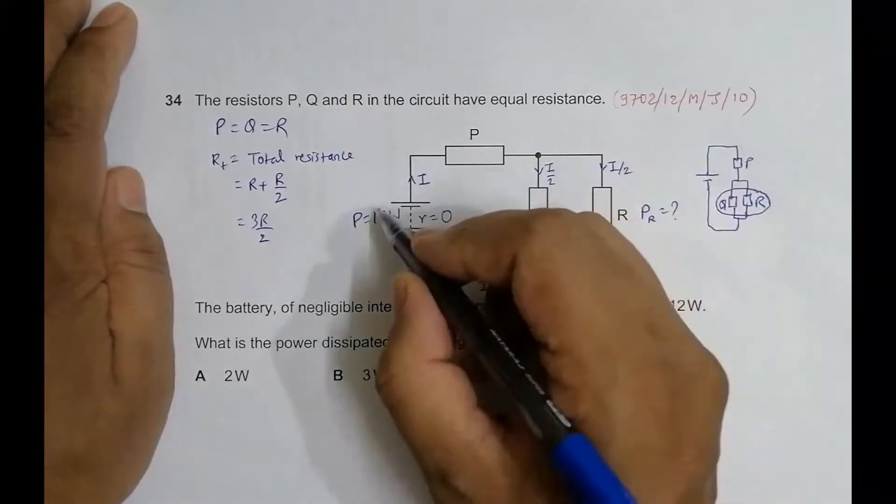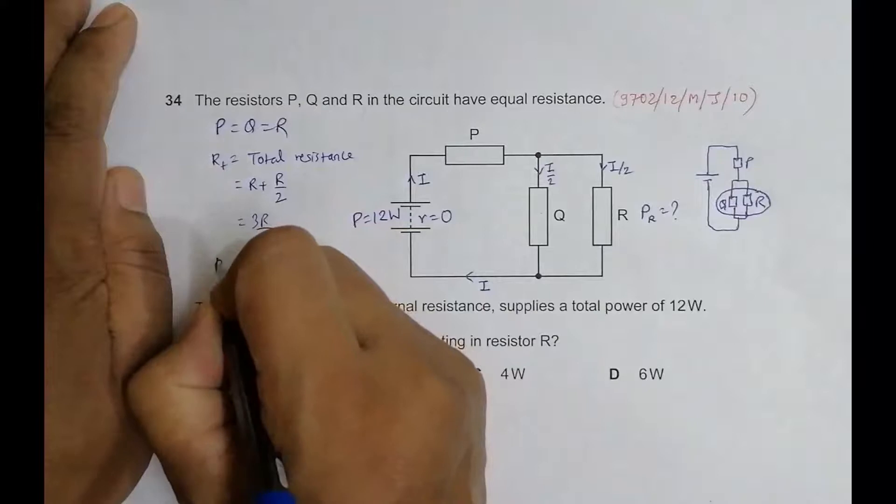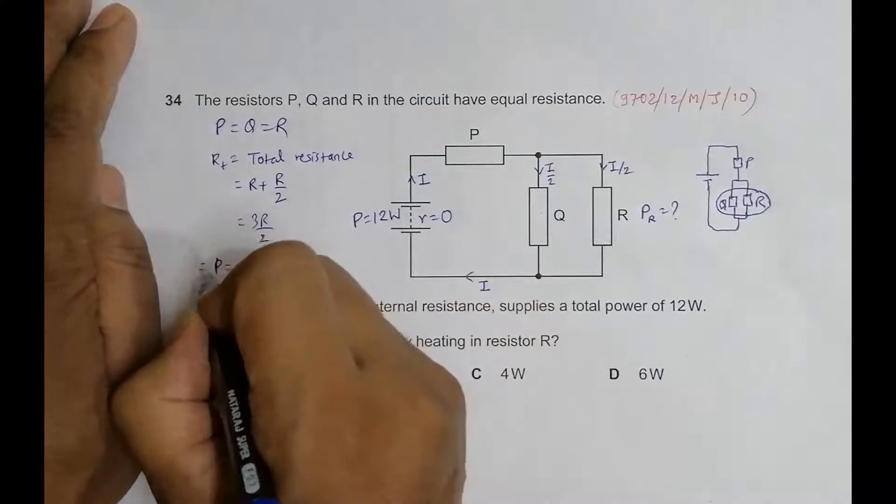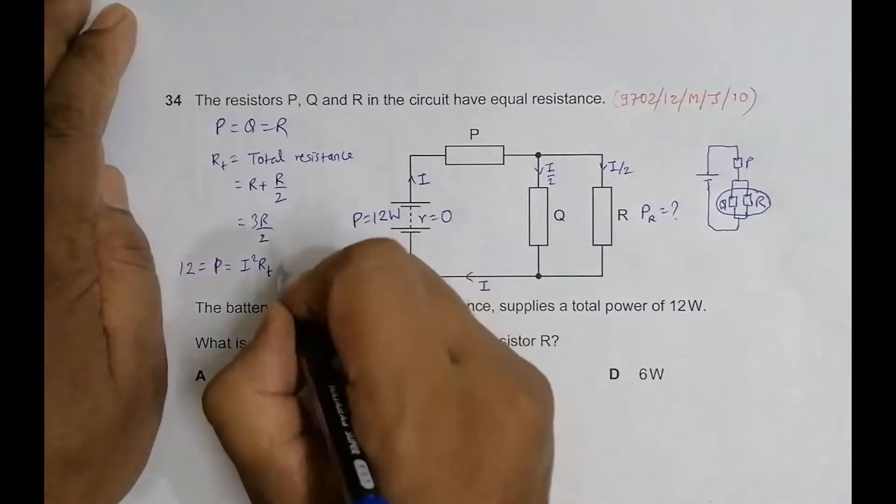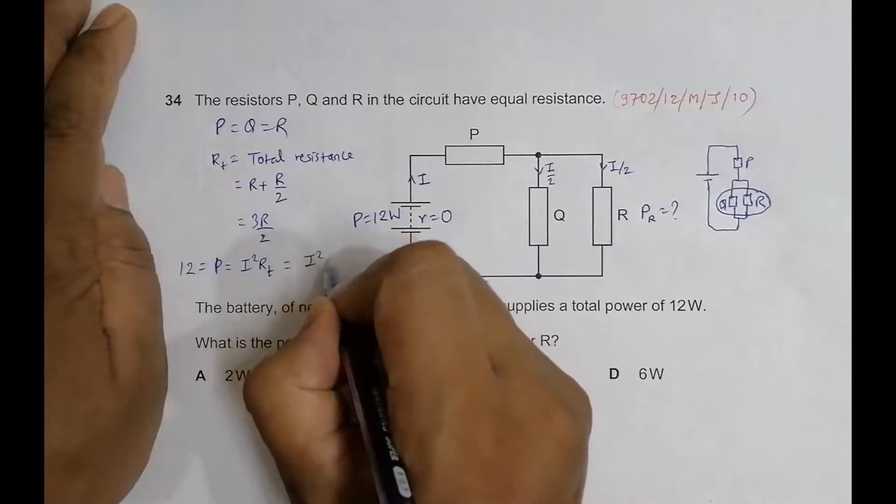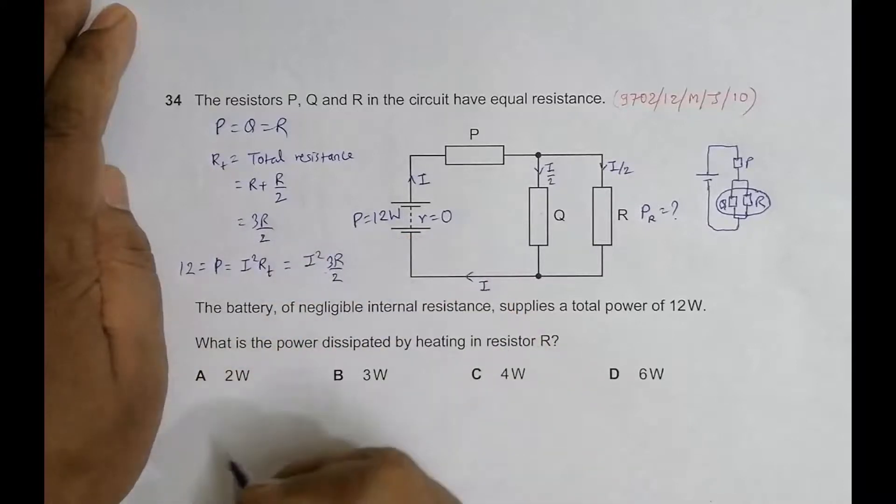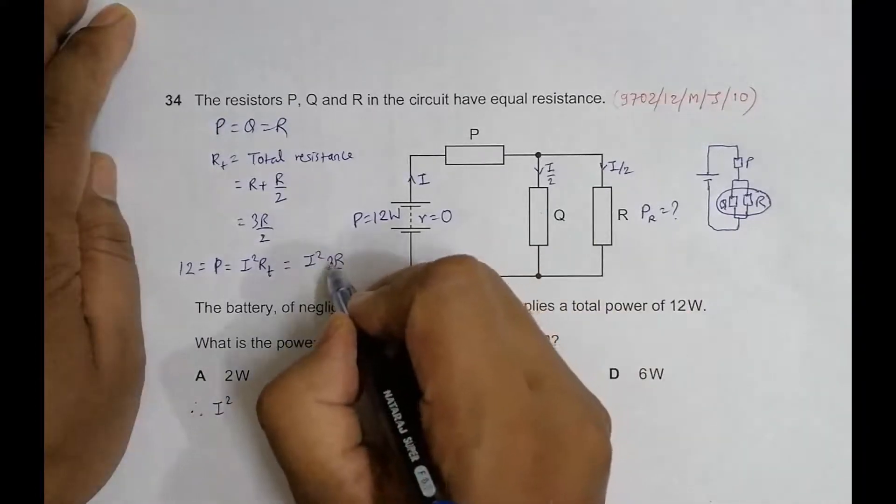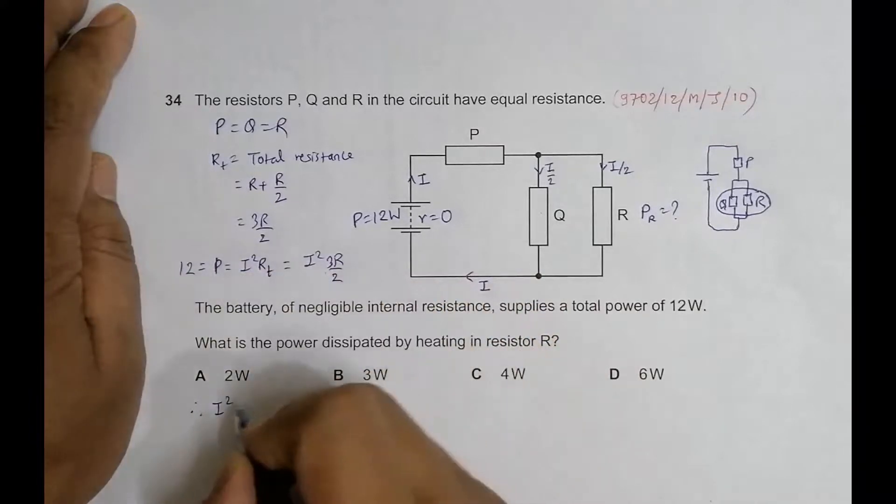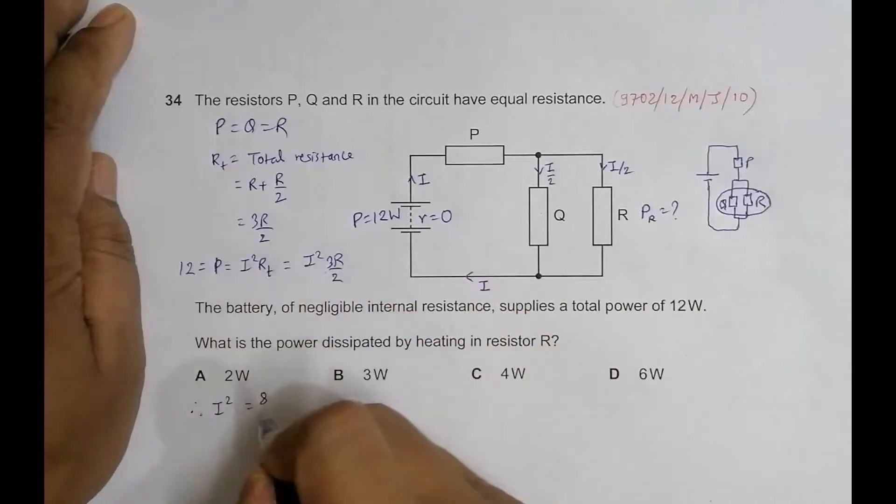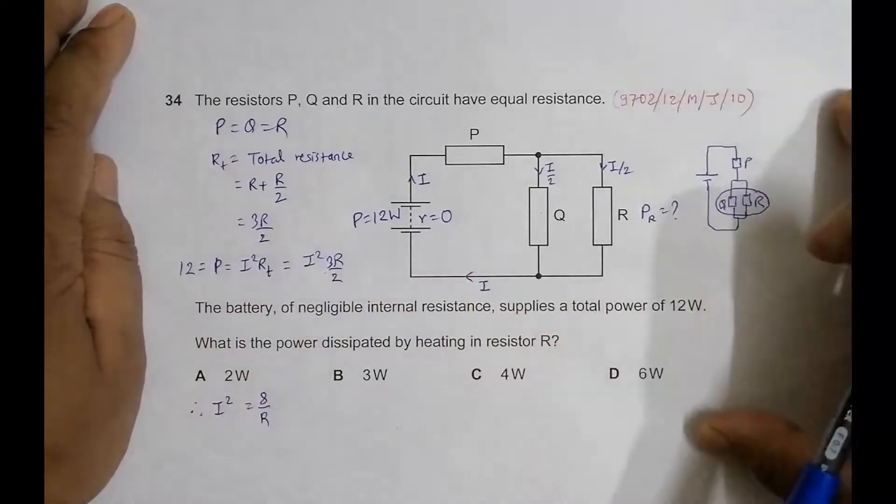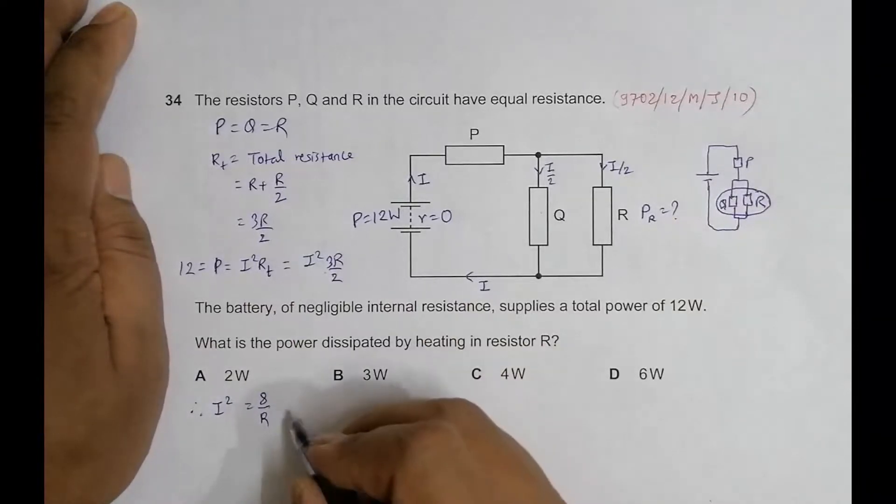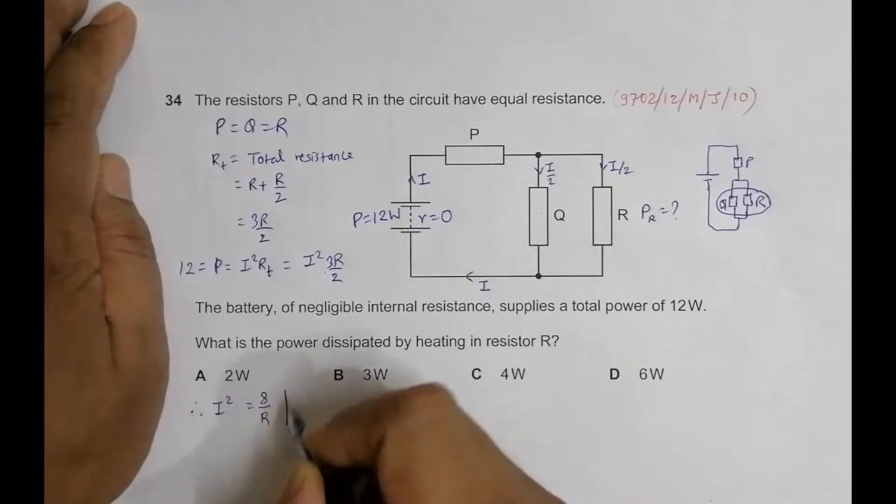Now the current, the power, and the total resistance are related as P = I² × R_T. This power is equal to 12, and R_T is equal to 3R/2, so it is I² × 3R/2. This gives us 12 = I² × 3R/2, which gives us I² = 8/R.